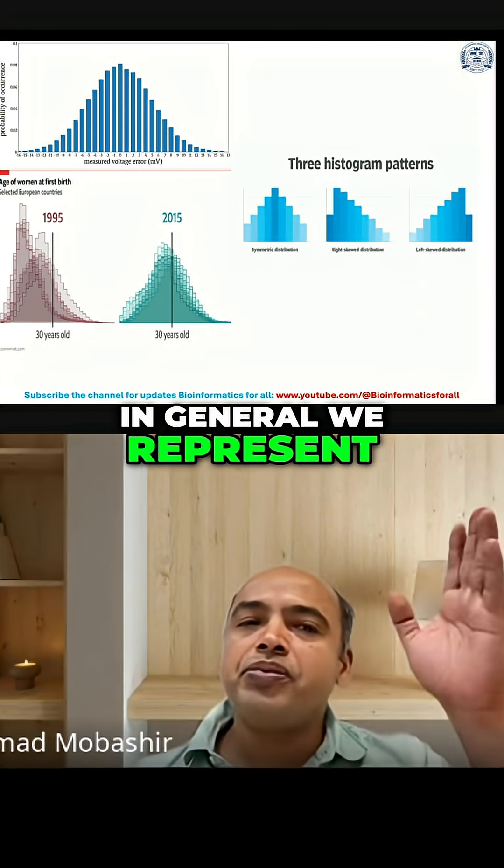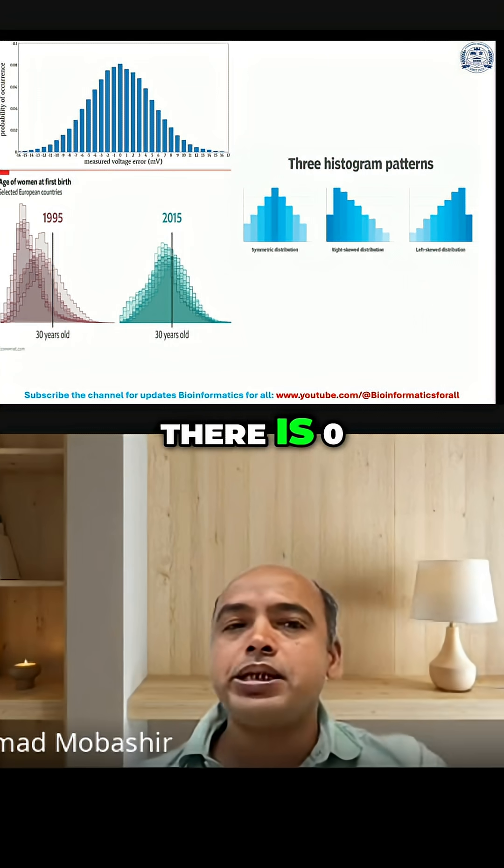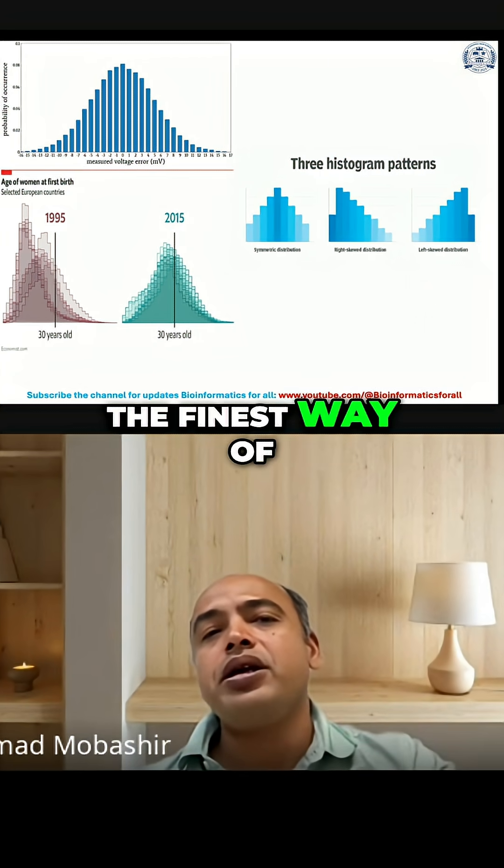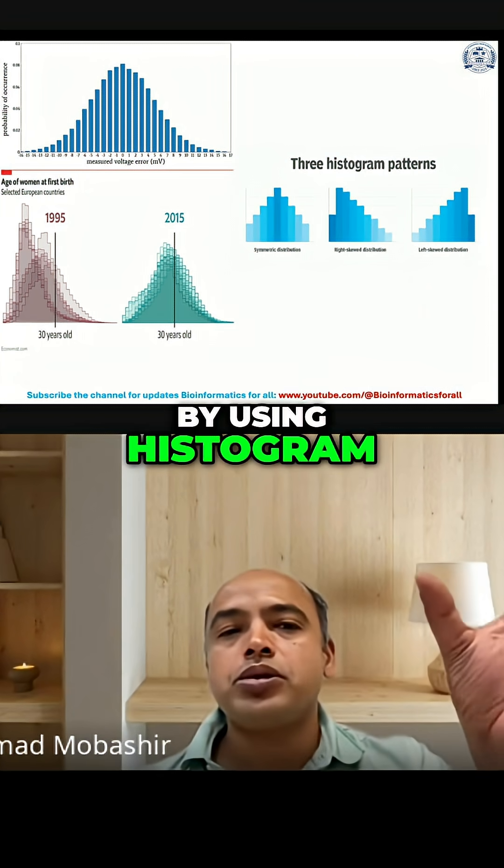In general, we represent minus one to plus one, and in the middle there is zero. But this is also the finest way of presenting the normal distribution by using histogram.